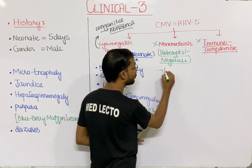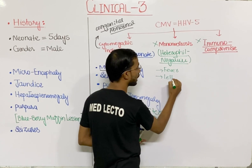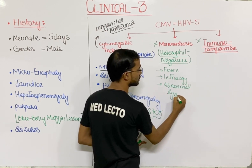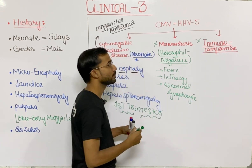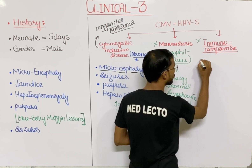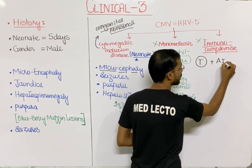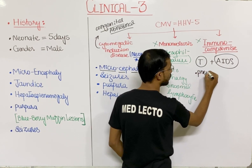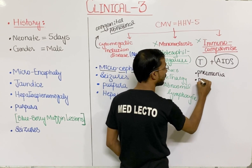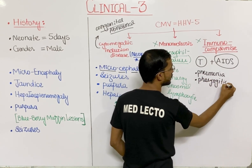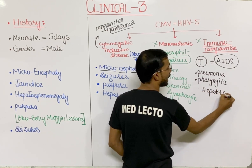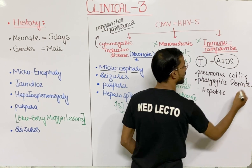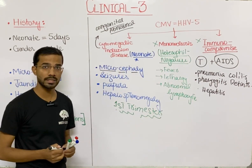In the mononucleosis category, you will see fever, lethargy, and abnormal lymphocytes. In immunocompromised patients such as transplant recipients or AIDS patients, the presentation differs. Transplant patients may show pneumonia, pharyngitis, and hepatitis. AIDS patients may present with colitis and retinitis. These are the different symptoms for the three categories of CMV infection.